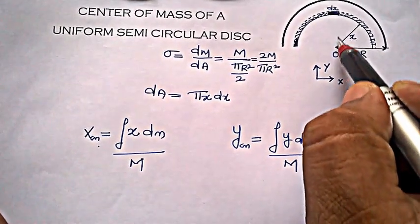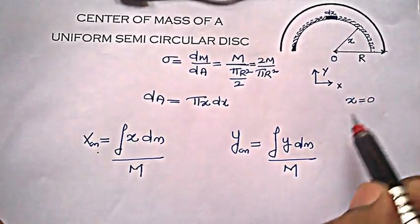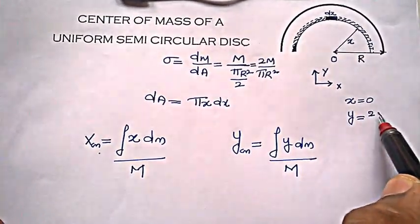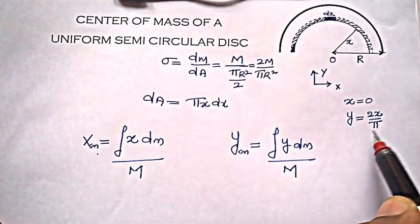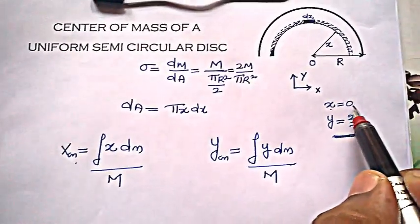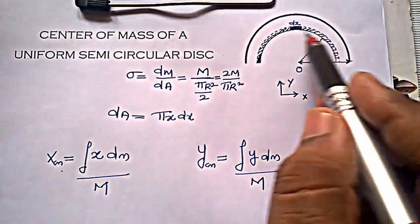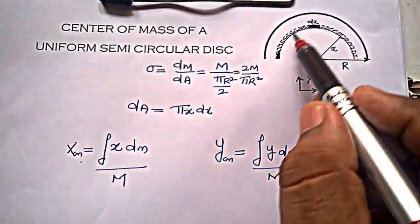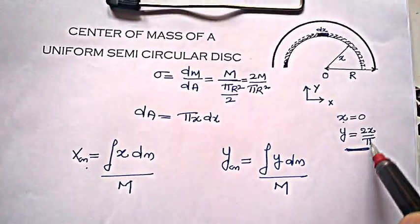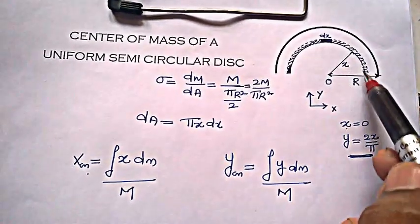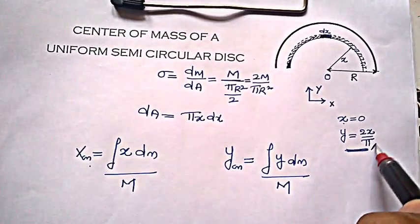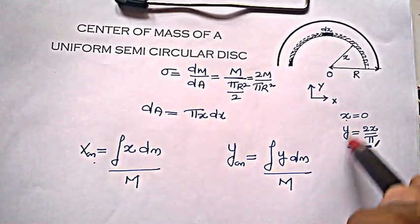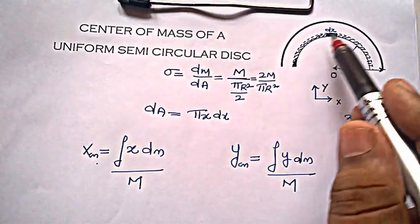The center of mass of a semicircular ring lies at a distance of 2r/π. To know why it is 2r/π, you can go through my previous videos. So y = 2r/π, but the radius here is x, so I can write y = 2x/π. So x = 0 is the center of mass coordinate of this half ring along x, and the y coordinate is 2x/π because the radius is x.